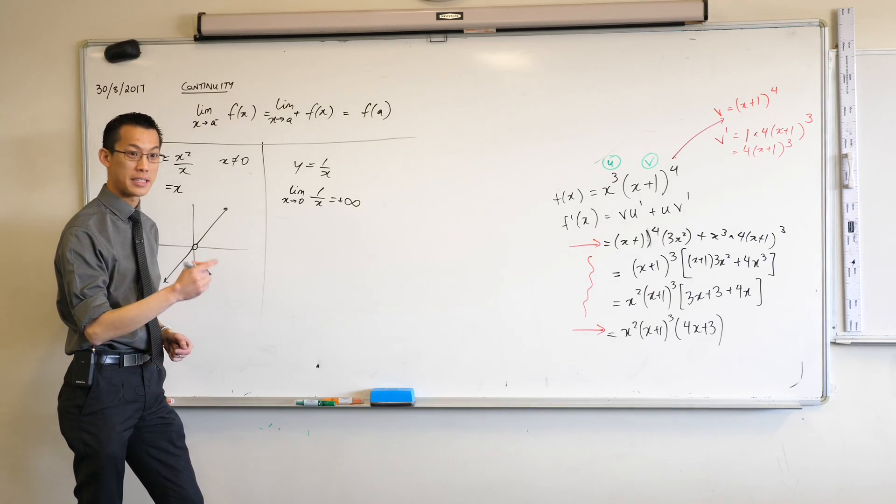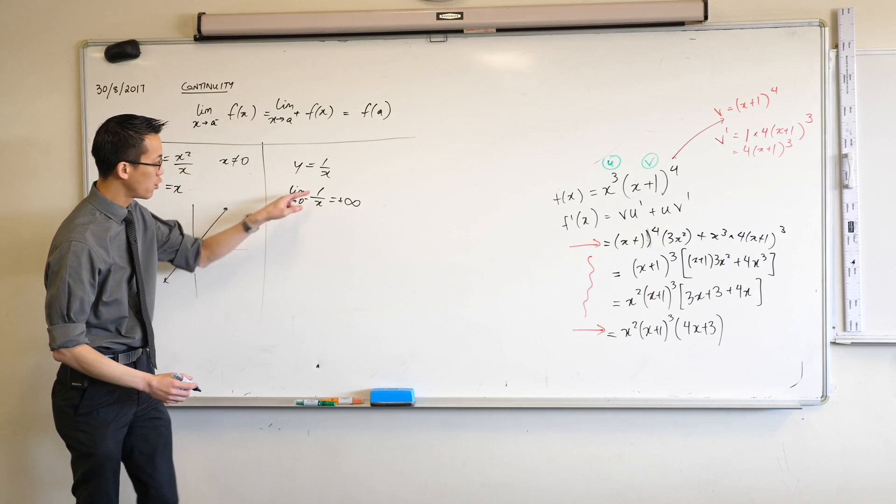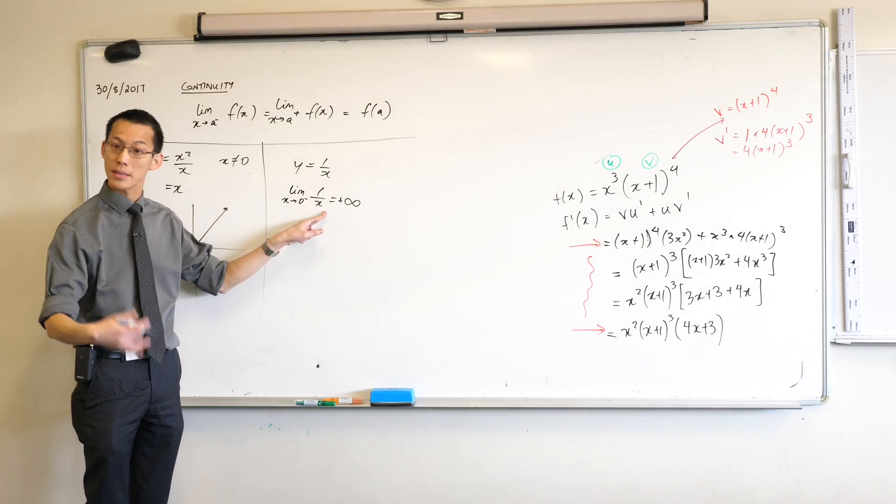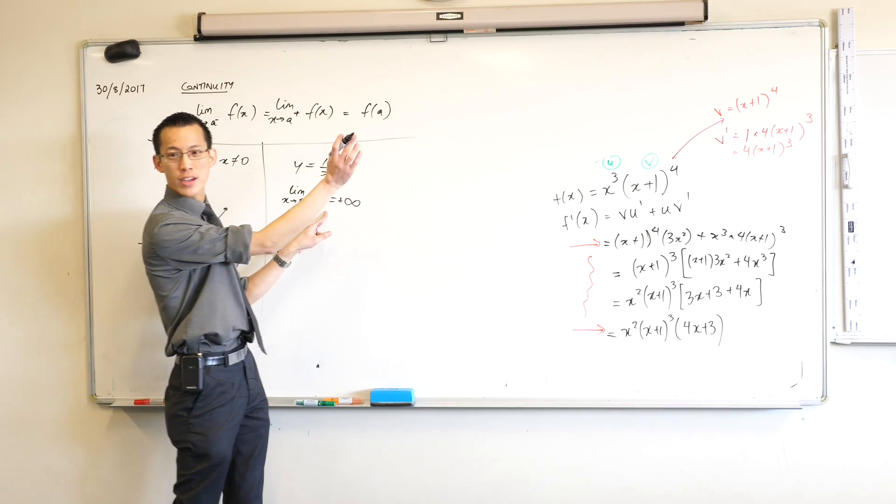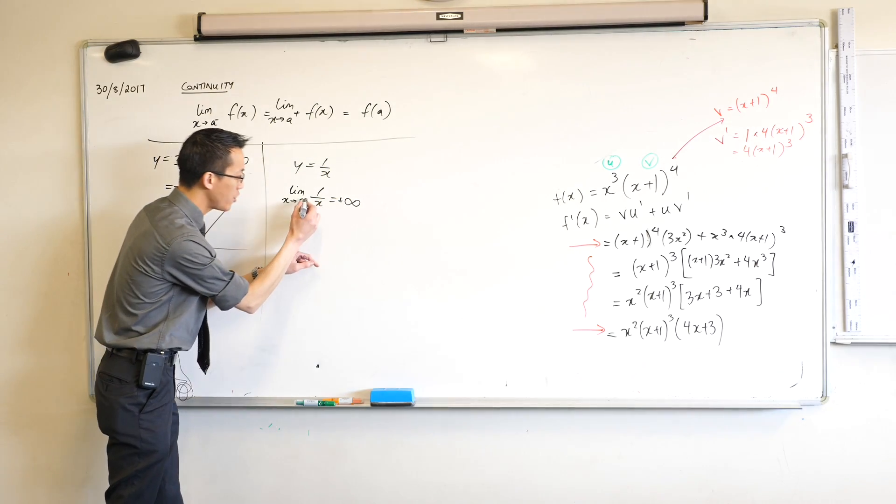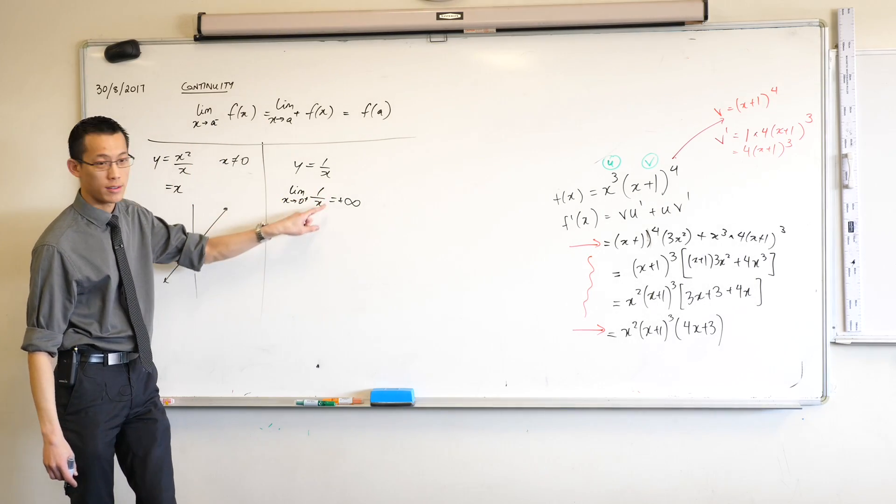But only when you come from a particular direction because if you come from a negative direction you've got a positive number divided by a negative. Divided by really small negatives but they're still negative and what we were talking about with regions before, you won't get positive infinity, you'll get negative infinity.